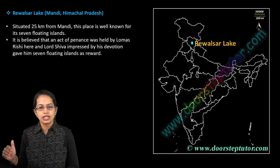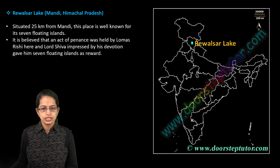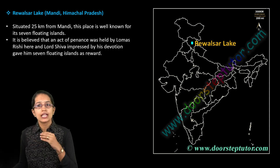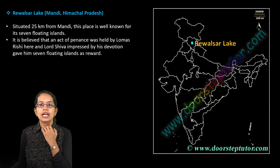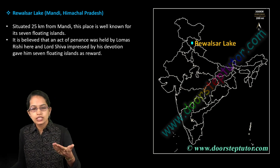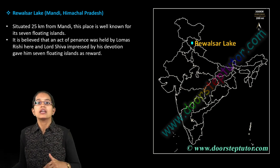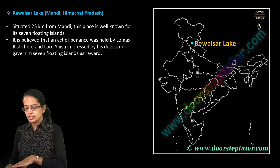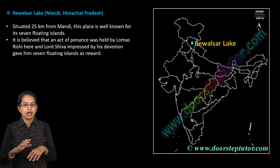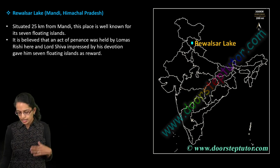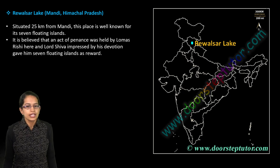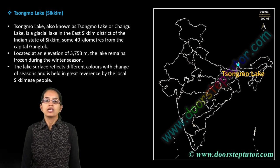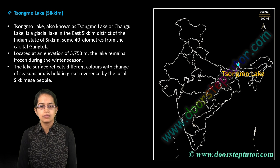Rewalsar Lake is located in the Mandi area of Himachal Pradesh. It is known for its seven floating islands. It is believed that when Lord Shiva was pleased with Lomas Rishi, he gave him a boon — these seven floating islands on the lake as a reward. It is a very important location for tourism purposes.